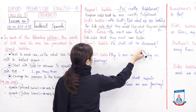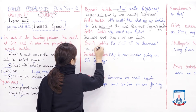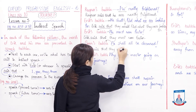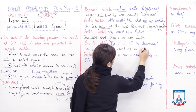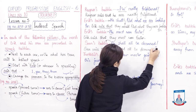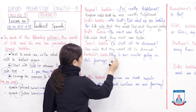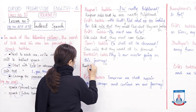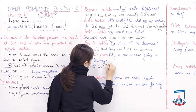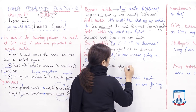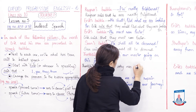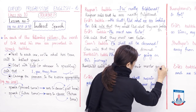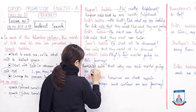Sven's bubble: 'We shall all be drowned.' Sven said that — 'we' changes to 'they' — they would all be drowned. Thauclitz's bubble: 'Why is our master going on this journey?' This is a question, so we will write it in question form. Thauclitz said that why was their master — 'our' changes to 'their' — why was their master going on this journey?